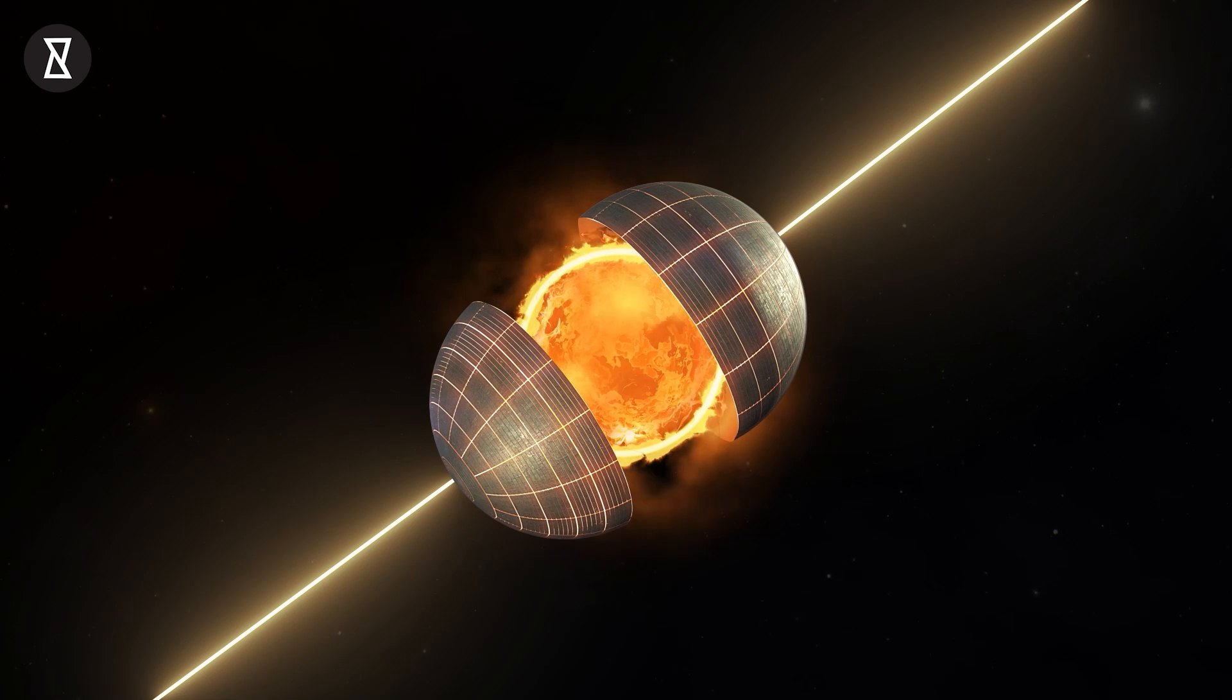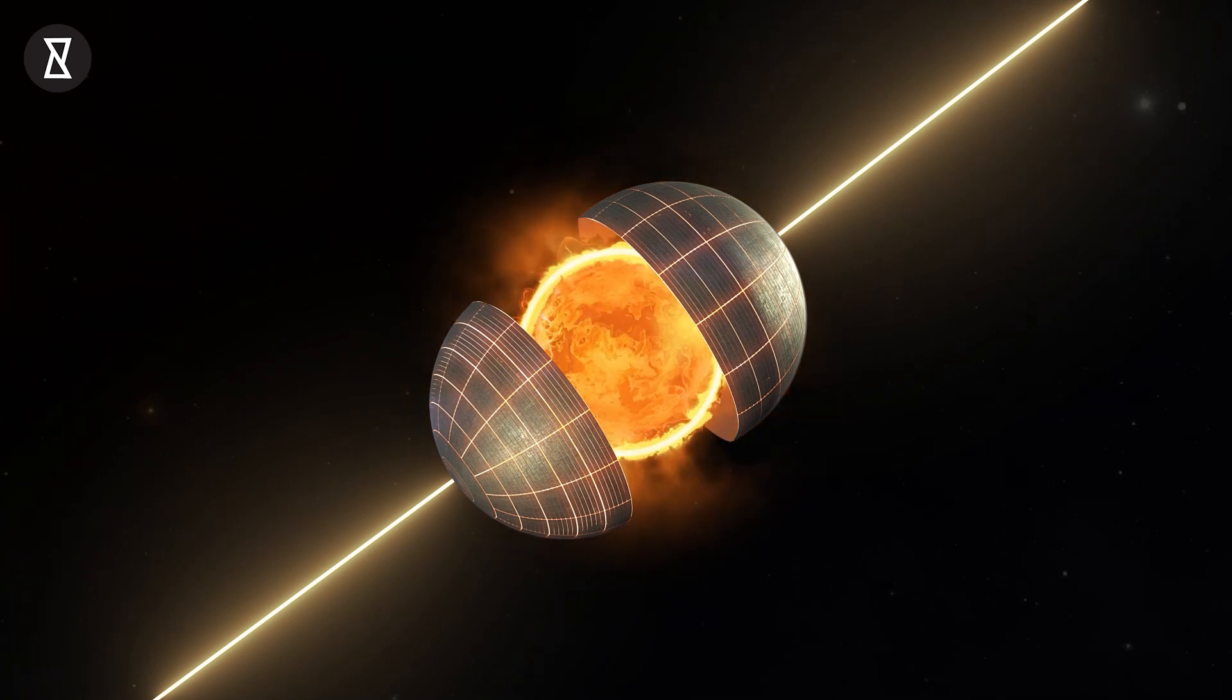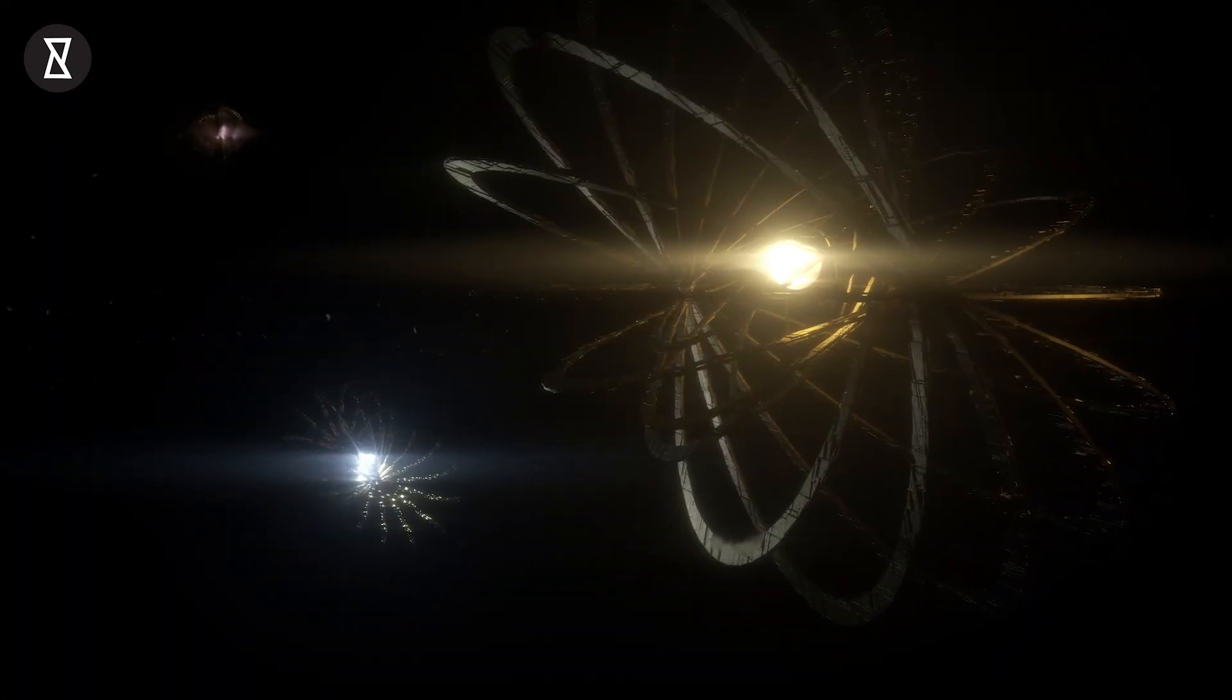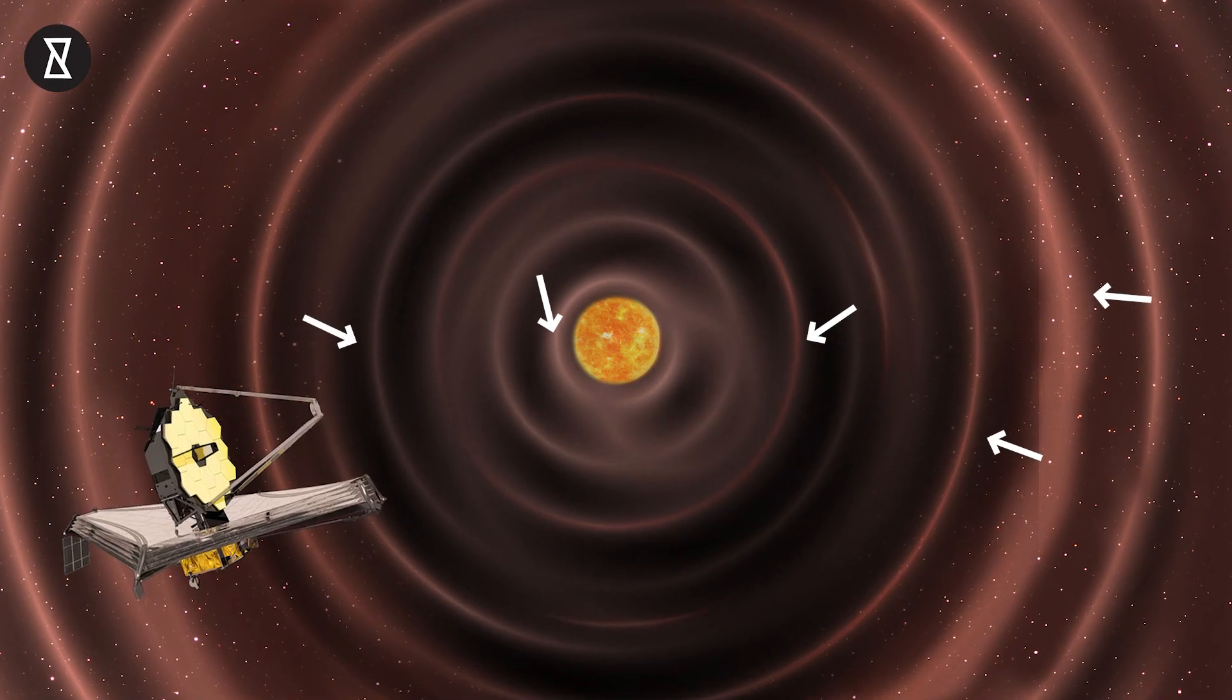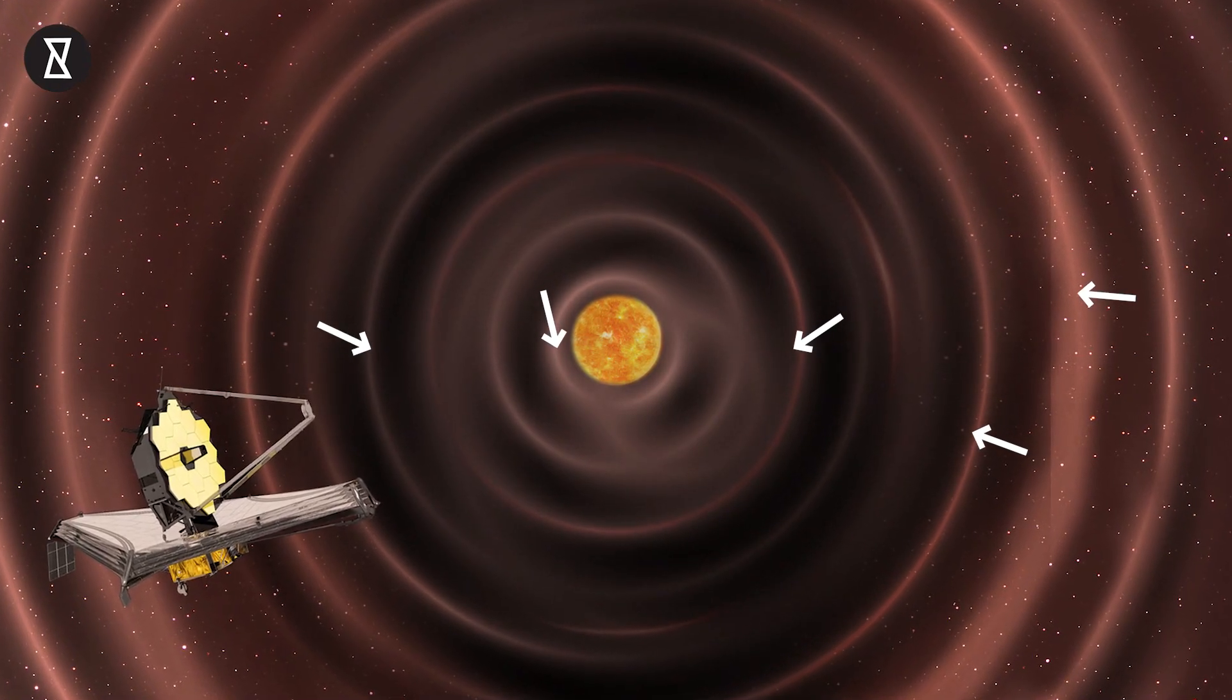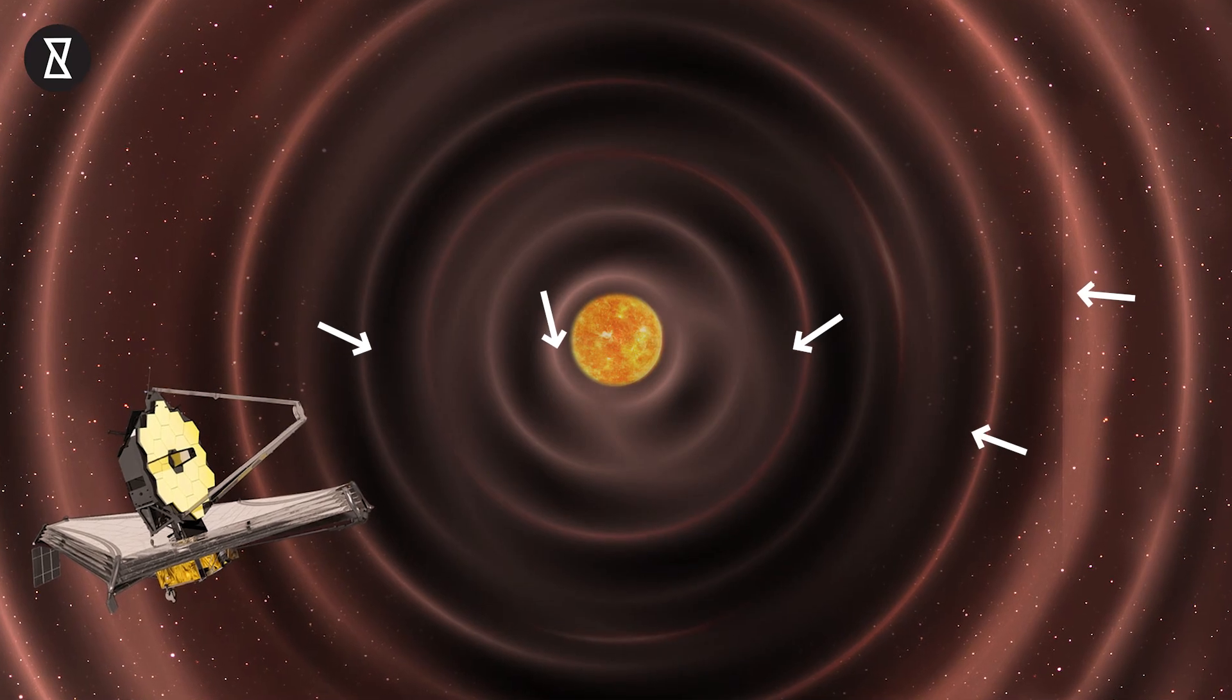But why are we talking about a hypothetical megastructure? Did we finally catch a glimpse of an actual Dyson sphere around a star? Actually, no. But we do have a cosmic spectacle with mysterious rings around it.